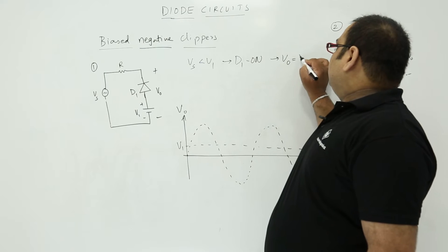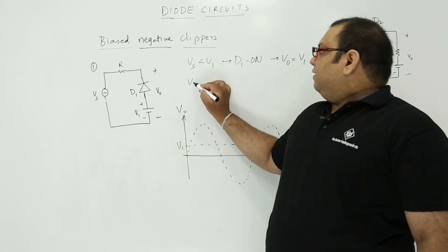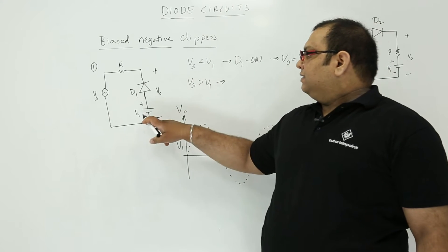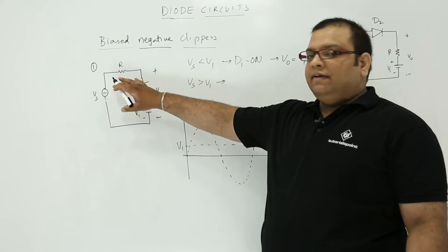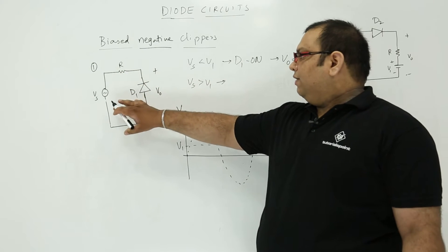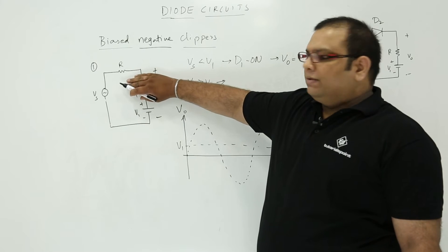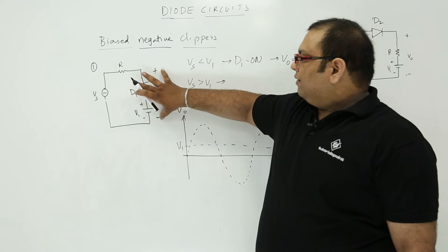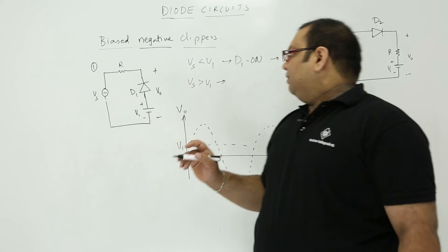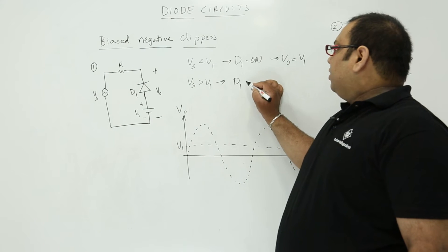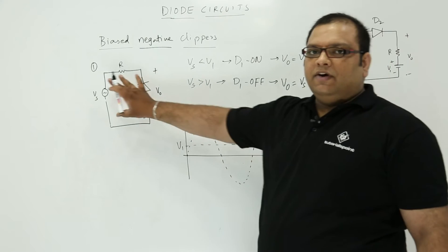Now let us take the other case. When Vs is greater than V1, Vs is more than V1, on the negative side we have more voltage, on the positive side we have less voltage, so the diode will be in reverse bias. When the diode is in reverse bias, this is open circuit. When it is open circuit, the output voltage is same as Vs, because there is no connection here. So when the diode D1 is in off condition, V0 is equal to Vs.